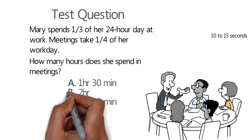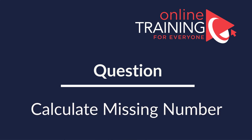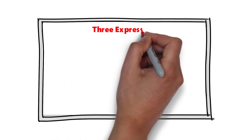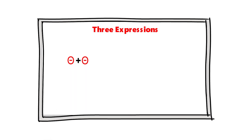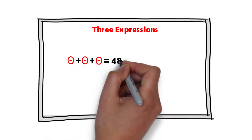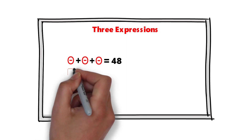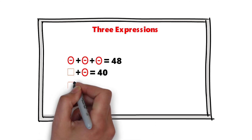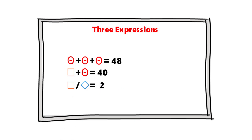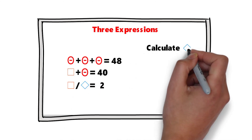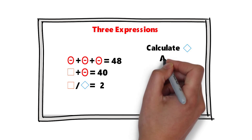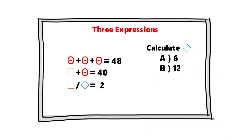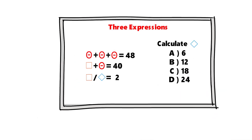Here's a cool question frequently used on the test. You're presented with three expressions: a circle with a dot inside plus another circle plus another circle equals 48. In the second expression, square plus circle equals 40. In the third expression, square divided by diamond equals a value you need to find — the diamond. You have four choices: A) 6, B) 12, C) 18, and D) 24.